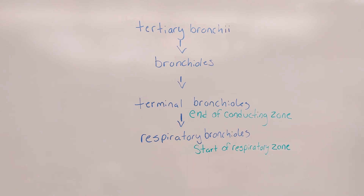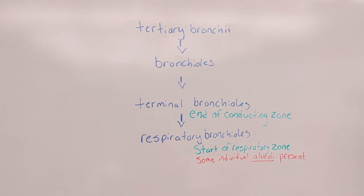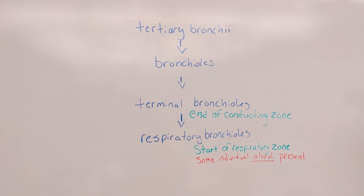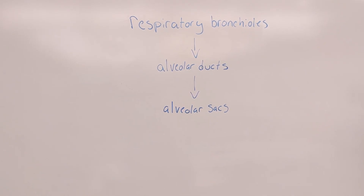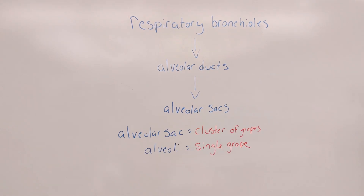Respiratory bronchioles are the start of the respiratory zone because they have something hanging off them. After the respiratory bronchioles, what comes next? Respiratory bronchioles lead into alveolar ducts, and alveolar ducts lead into alveolar sacs. What is the difference between an alveolar sac and an alveolus? An alveolar sac is just many alveoli — an alveolar sac is like a cluster of grapes, and an alveolus is like a single grape. I have a histology video on alveolar ducts, sacs, and alveoli in my respiratory playlist.